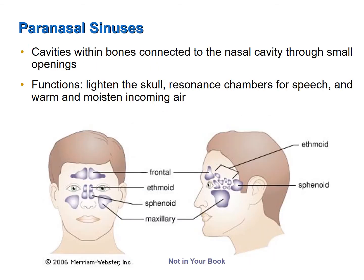The paranasal sinuses are cavities within bones of the skull lined with respiratory membrane, connected to the nasal cavity through small openings. "Para" means beside, so these are the sinuses beside the nasal cavity. They function to lighten the skull, act as resonance chambers for speech, and help warm and moisten incoming air.